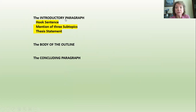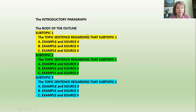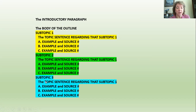In review: the introductory paragraph has a hook sentence first, then mentions three subtopics, followed by the thesis statement. Then we looked at the body of the outline — you create a topic sentence for each subtopic, and then you have three examples with their source numbers, and you do that for every subtopic.